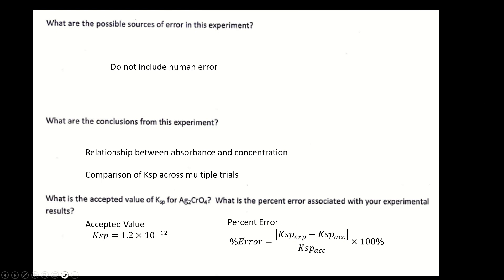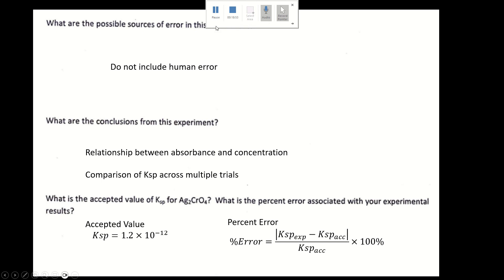With all that information, that is enough to conclude your data sheet. Essentially, all you need to complete the in-person part of the lab is your absorbance values for parts one and two — the remainder can be done outside the lab room. This concludes our pre-workup for this experiment.